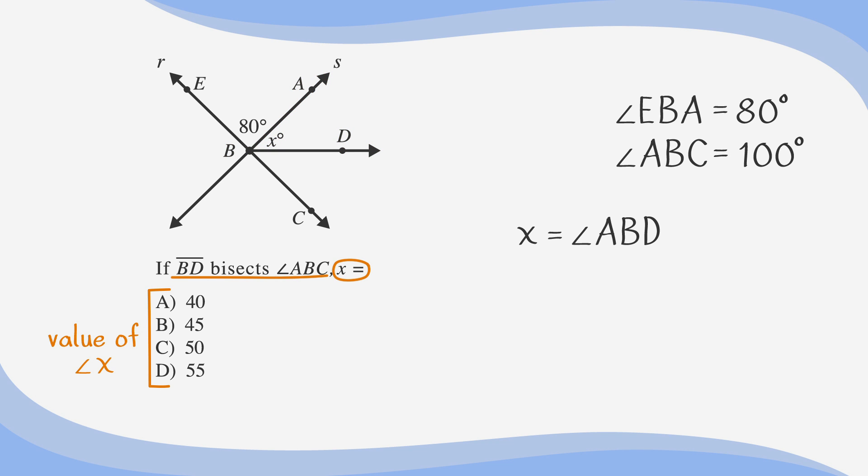We're told that line BD bisects angle ABC. A bisector always cuts an angle in half. Let's use this information to solve for x by writing an equation. x equals one half times angle ABC. Plugging in 100 degrees for angle ABC, we have x equals one half times 100. After multiplying, we get x equals 50 degrees. Looking at our answer choices, C is 50 degrees. Circle it because it's the right answer.